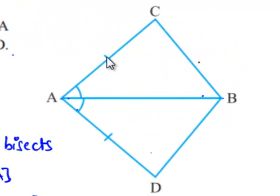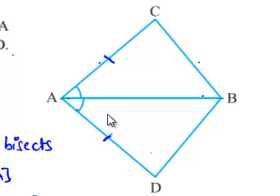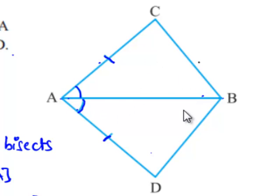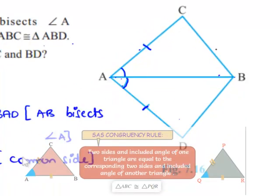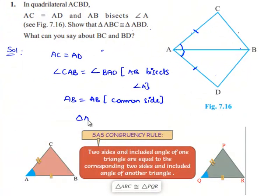Observing clearly, side AC corresponds to side AD in triangle ABD and they are equal. Angles BAC and BAD, corresponding to triangles ABC and ABD, are equal. And AB is the common side for both triangles. Therefore, according to the SAS property of congruency, triangle ABC is congruent to triangle ABD.